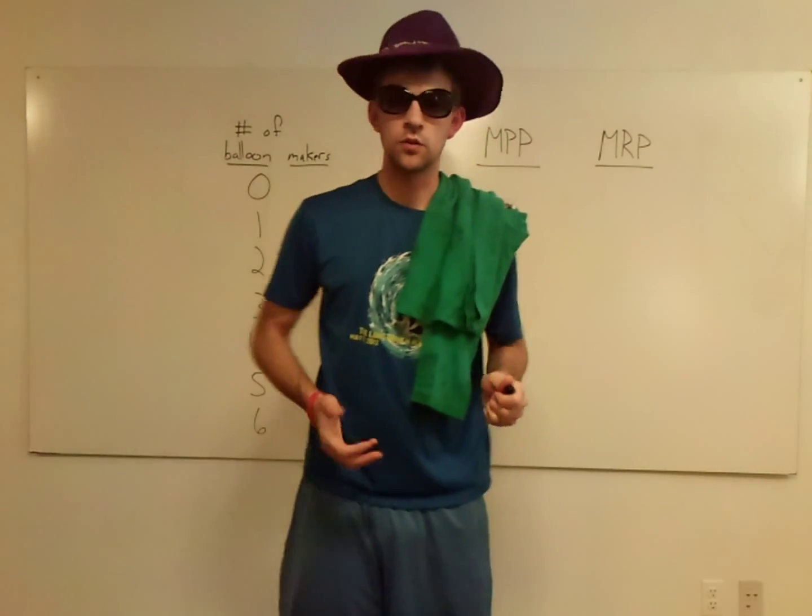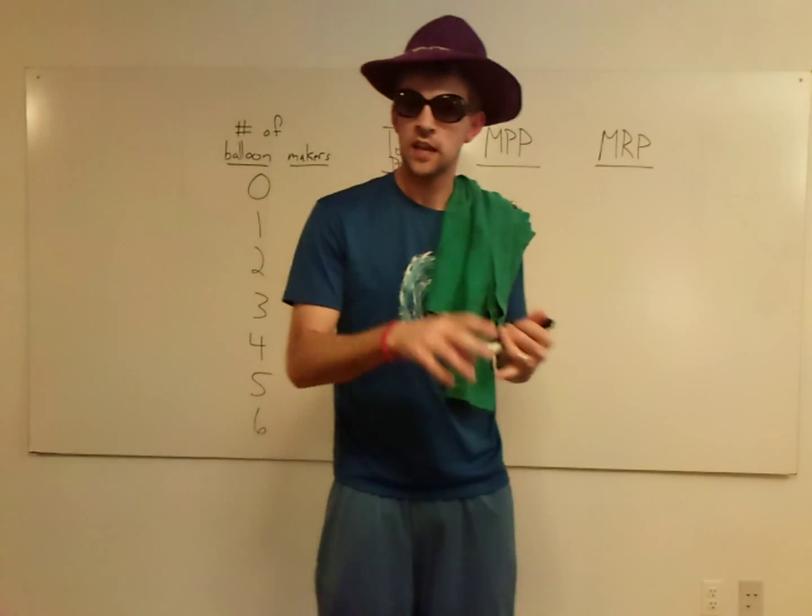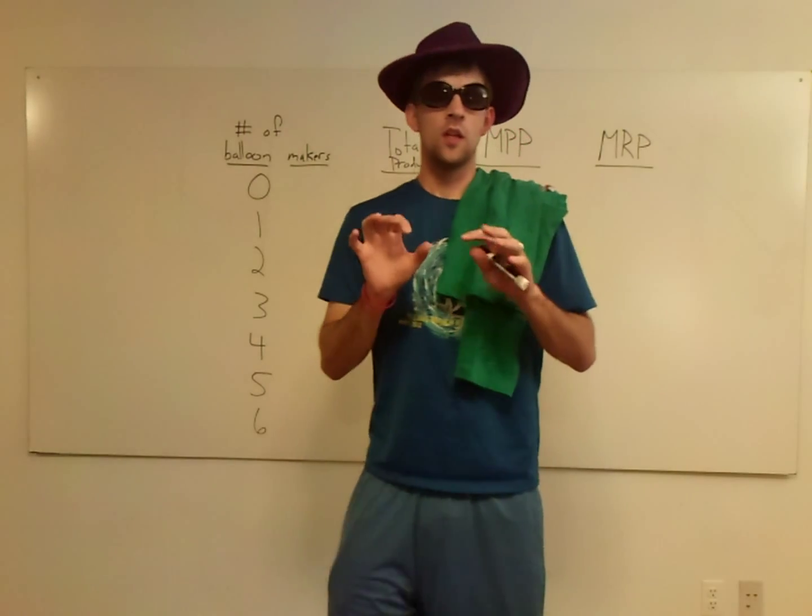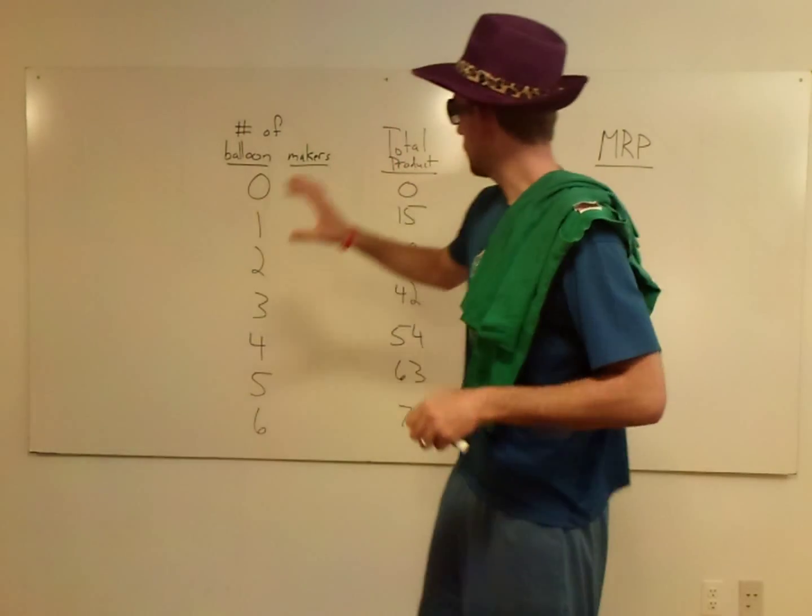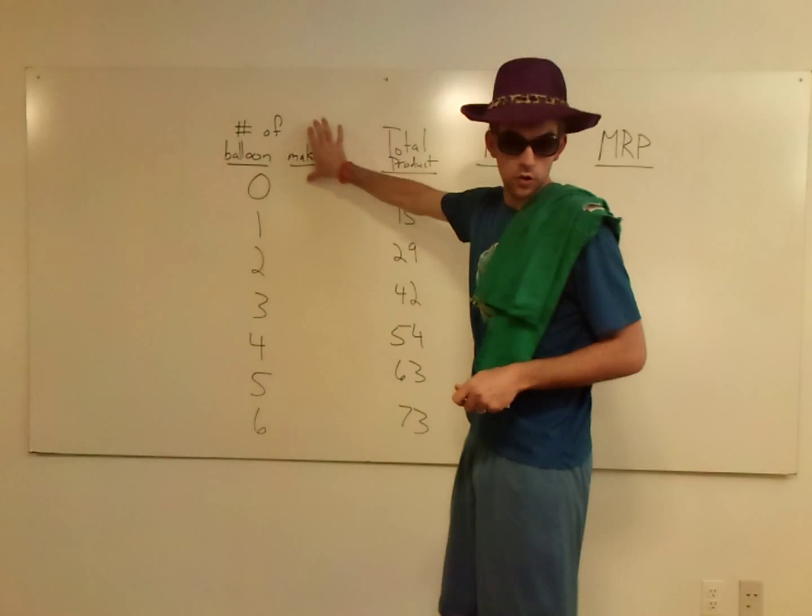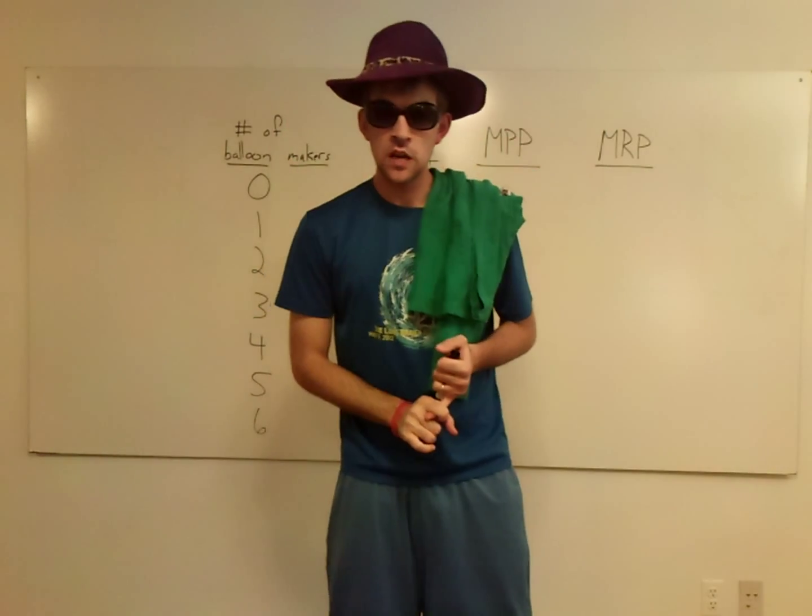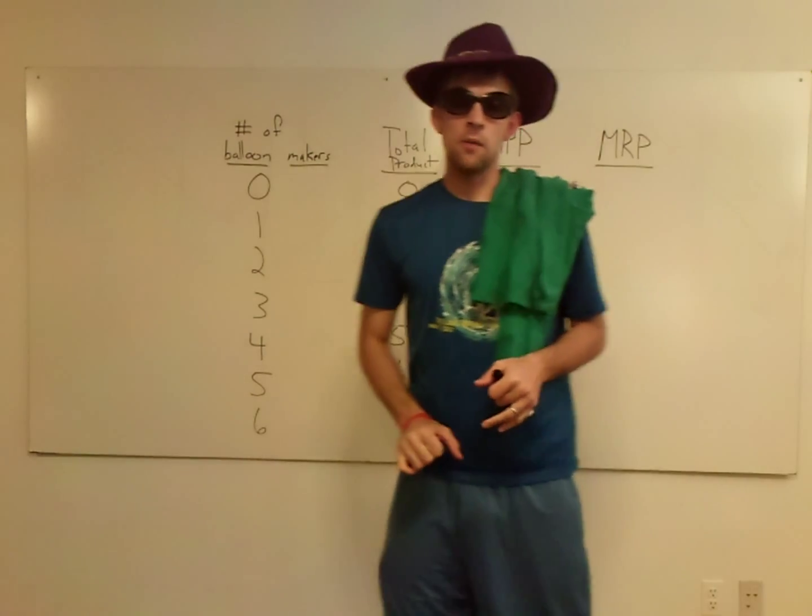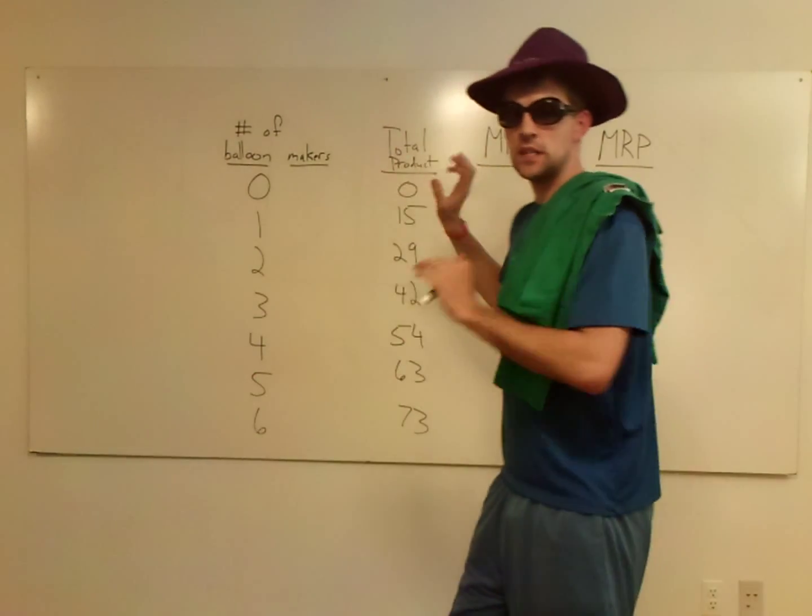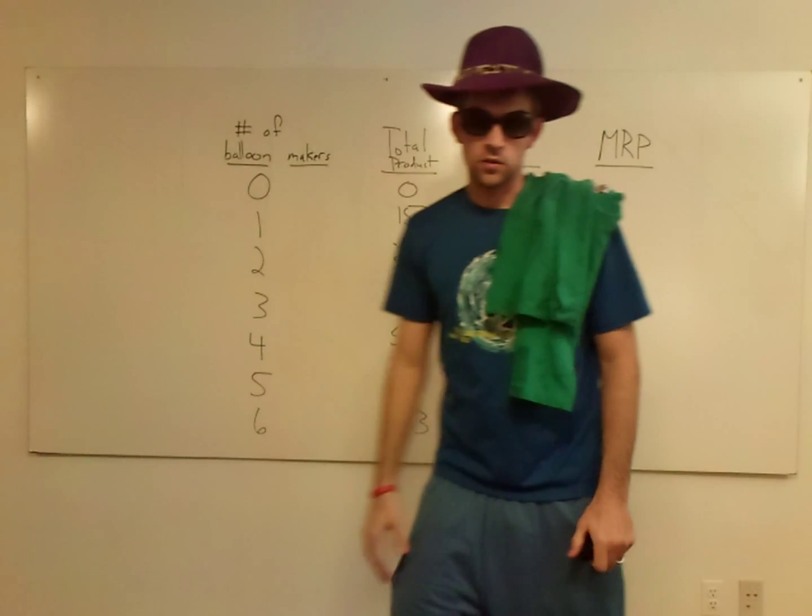Here the households are selling productive resources or the factors of production: land, labor, and capital. So the problem I'm about to do is going to deal with workers, balloon makers, but this could also deal with machinery or property or some other productive resource besides balloon makers.